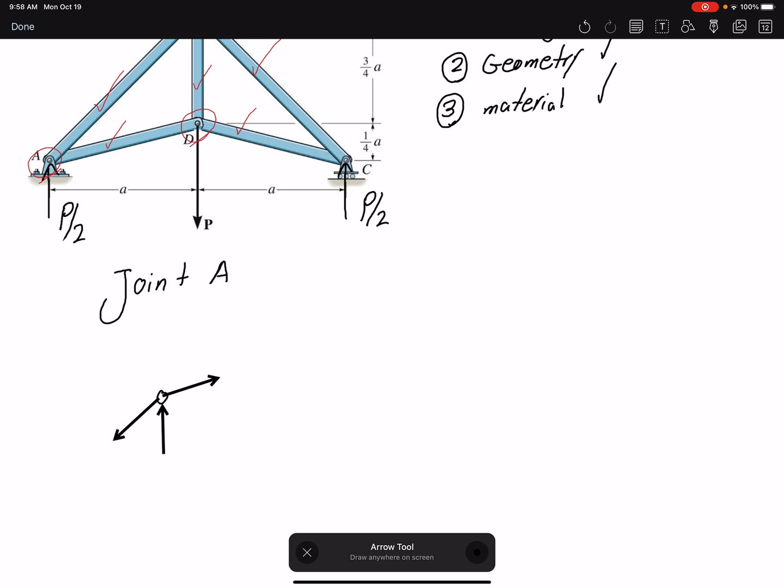If we find a negative value, that means the direction that we assumed is incorrect. But the other way to look at it is that the problem has already given us which members are in tension and which members are in compression. We know member FBA is in compression, so it's going away from the member. And AD would be in tension, so it's going towards the member.